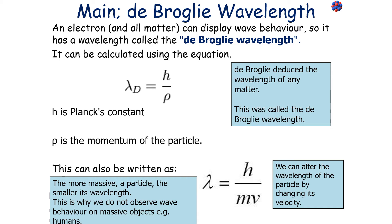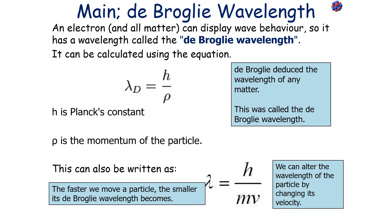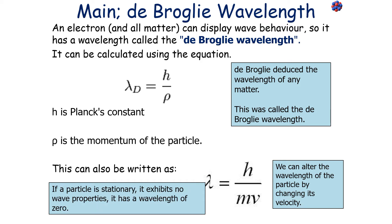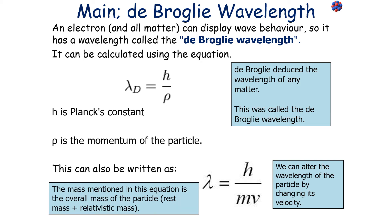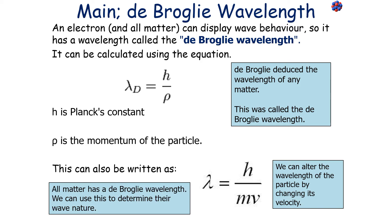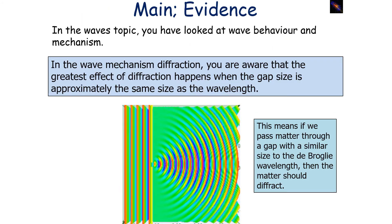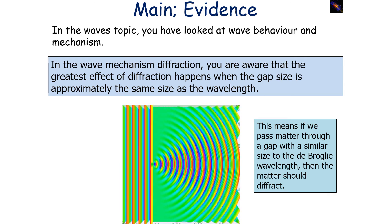This is why we don't observe wave behavior on massive objects, for example humans. The faster we move a particle, the smaller its de Broglie wavelength becomes, and if a particle is stationary, it exhibits no wave properties whatsoever — it has a wavelength of zero and is purely matter. The mass in this equation is the overall mass of the particle — the rest mass plus its relativistic or moving mass. All matter has a de Broglie wavelength, and the greatest effect of diffraction happens when the gap size is approximately the same size as the wavelength.